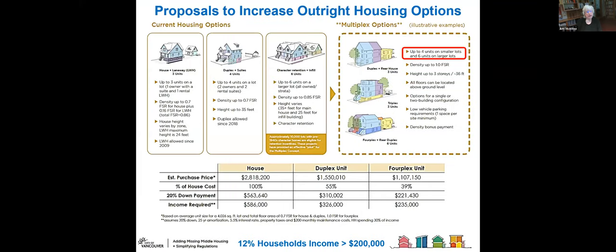Concerns about the time and cost involved in those rezonings have meant that Vancouver is currently looking at changing its regulations to allow multiplex homes — four units on a smaller lot, roughly 33 by 120 feet, and up to six units on a larger lot, typically 60 to 120 feet. If those are permitted outright, there has been some analysis done of what the estimated price would be for those new units and what income would be required to actually purchase one of these multifamily units in those low-density neighborhoods.